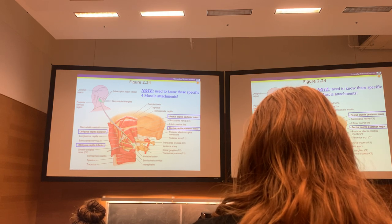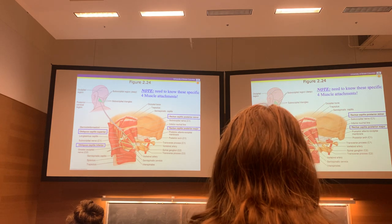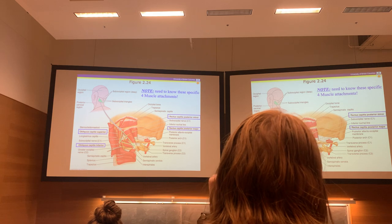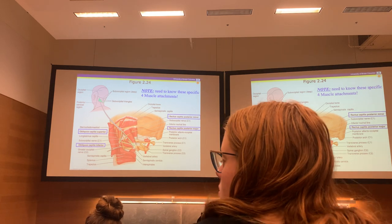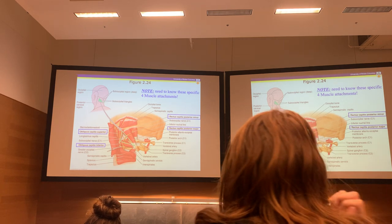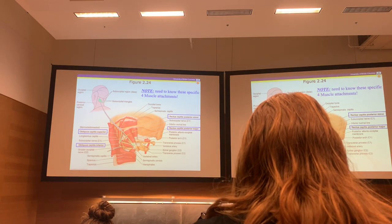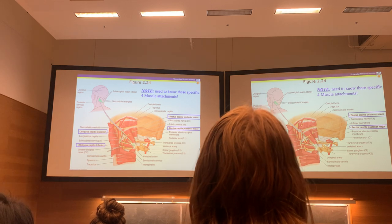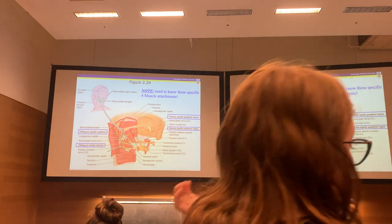Student question: What are the two attachments for obliquus capitis superior? The transverse process of C1, going up, and inserting just lateral to where the major inserts on the inferior nuchal line. The bigger line where trapezius and others insert is the superior nuchal line - the lesser inferior one is where these insert. The external occipital protuberance is up higher. So you need to know these four suboccipital muscles with their specific attachments. Look at their orientation in the lab and think about which direction the head will rotate when you bring the two attachment points together.